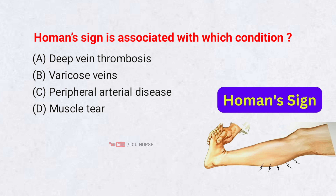Homan's sign is associated with which condition? A. Deep vein thrombosis. B. Varicose veins. C. Peripheral arterial disease. D. Muscle tear. Correct answer: [drop your answers in the comment section below].